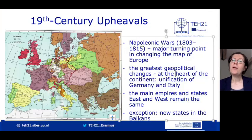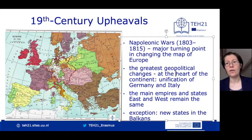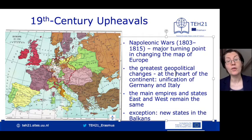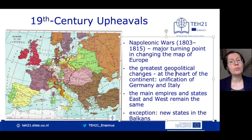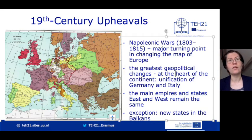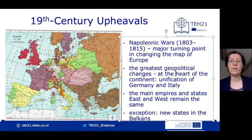European borders changed dramatically across the 19th century as part of the greatest territorial reshuffle of the century, the Napoleonic Wars and their aftermath. The most radical border changes occurred in the centre of the continent along an imaginary line connecting the German lands with the Italian lands.